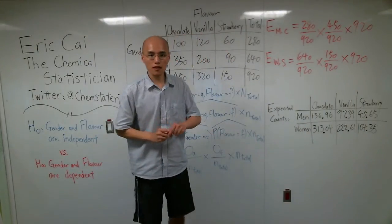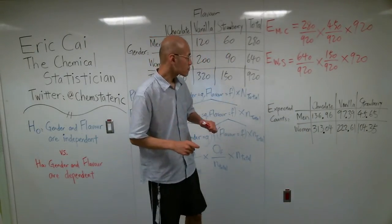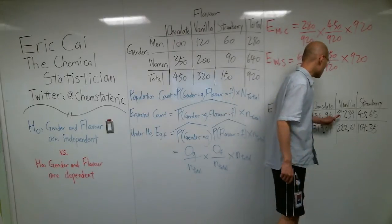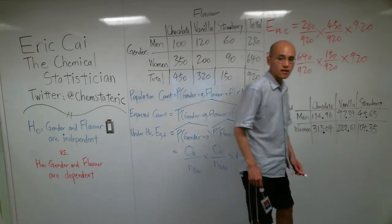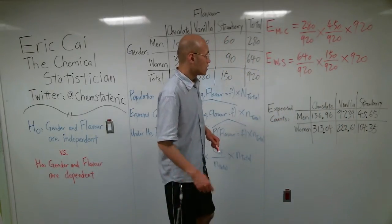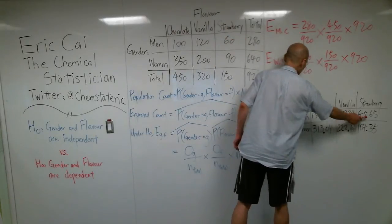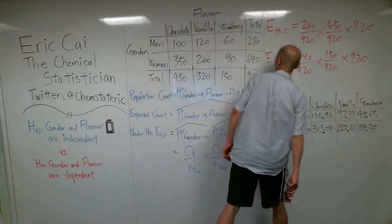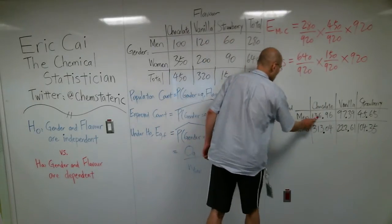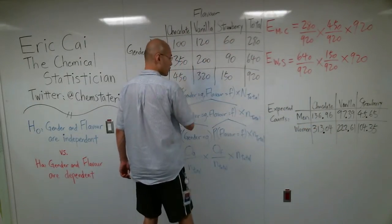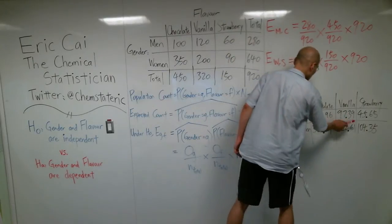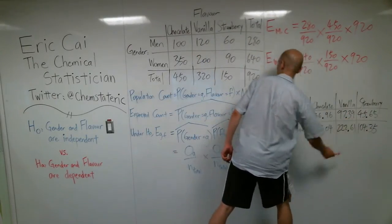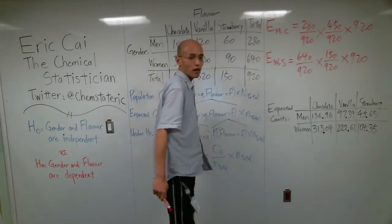Now, I've calculated these expected counts ahead of time, and these are the expected counts. And as a sanity check, these three numbers should add up to 280. These three numbers should add up to 640. These two numbers should add up to 450. These two numbers should add up to 320, and these two numbers should add up to 150.